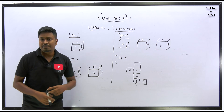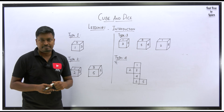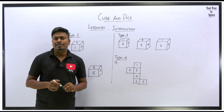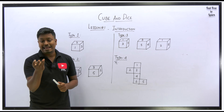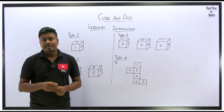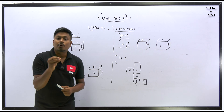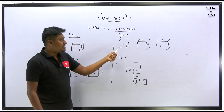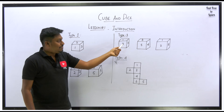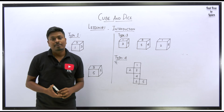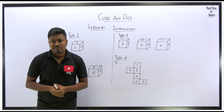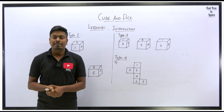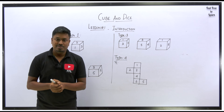In this introduction we learned three important terms — edges, corners, and faces — and the major difference between a standard dice and a general dice. Never forget: whenever you see a dice question in your exam, first decide whether it is a standard dice or a general dice, then apply the shortcut. From lesson two onwards we will solve questions for each type. Thank you for watching — share this video with friends preparing for competitive exams. Bye!